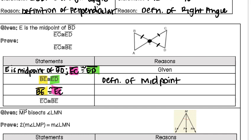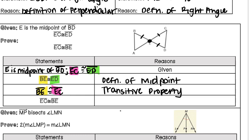We took two pieces: pink was congruent to green, and yellow was congruent to green — therefore yellow and pink are both congruent. That's an example of the transitive property. You could also use substitution, since you're replacing ED with EC. Either one is acceptable, but it's more specifically the transitive property, so that's the one to write.